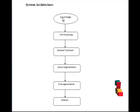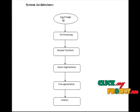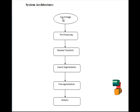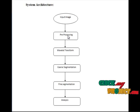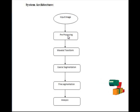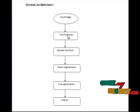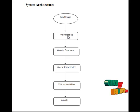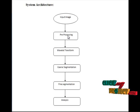This is the flow of our project. We provide the input mammogram image, which is passed to the pre-processing stage where we remove the noise. While generating the mammogram image, there is a chance of Gaussian noise, so we remove that noise using the Wiener filter.